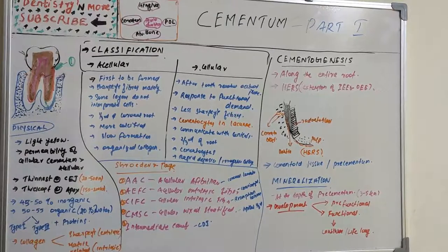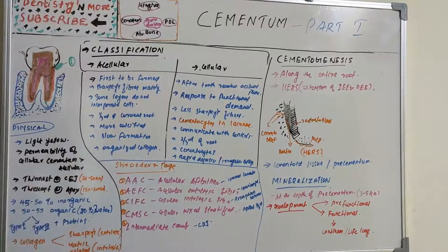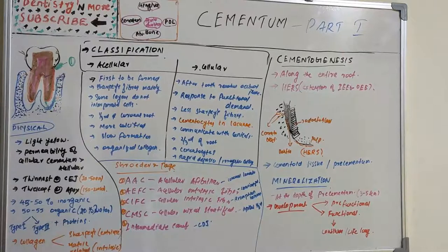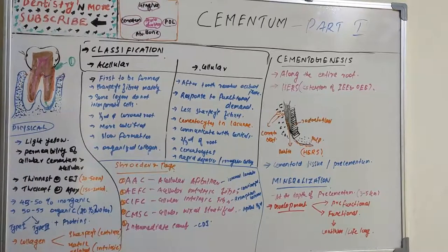The permeability of cellular cementum is greater than that of acellular cementum. With advanced age, the permeability of cementum decreases. Cementum is thinnest at the cemento-enamel junction — around 20 to 50 micrometers — and thickest towards the apex, where it is increased three or four times, measuring 150 to 200 micrometers.